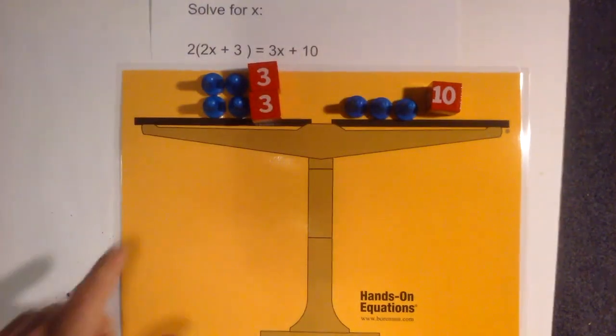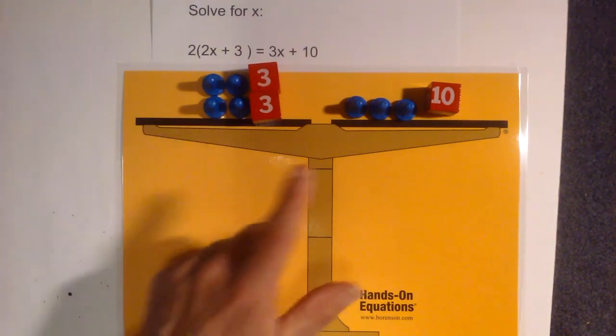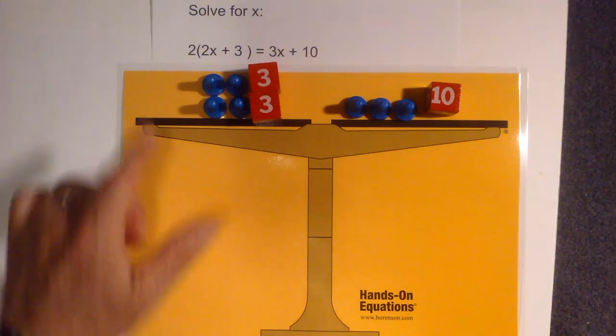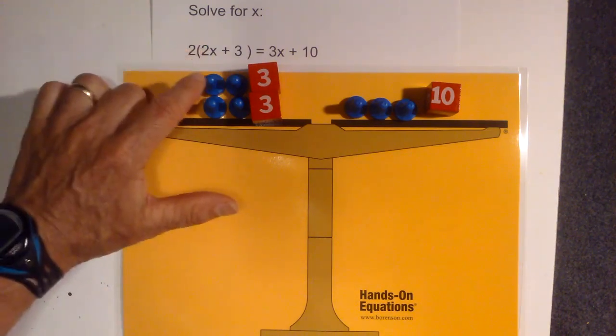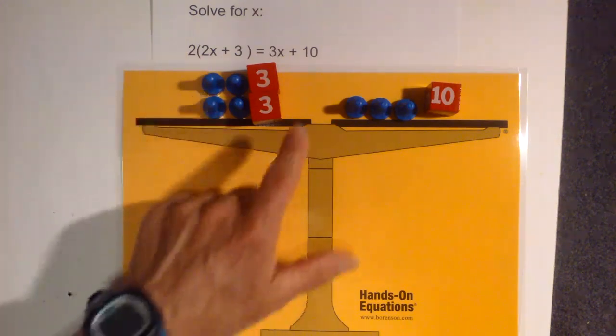So here we go. Now what I can do is I have the original physical setup completed. I'm going to check it. We have 2x plus 3, 2x plus 3, and we have two of these, one, two, and then we have 3x plus 10.